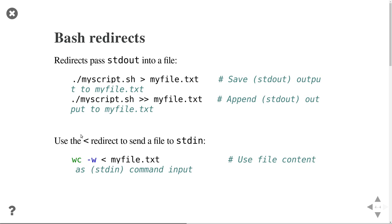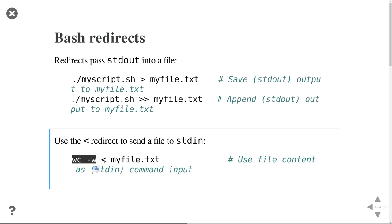The same thing works with standard input. If you want to use a file as input to a program, use the less-than symbol. For example, the wc program counts the number of words. If you just run it, you have to enter text manually, but here you can use an existing file as standard input. So this command will tell you the number of words that myfile.txt contains.